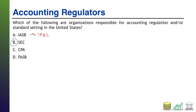CPA stands for Certified Public Accountant. This is the licensure you have to get in order to perform independent audits of companies — CPAs are not responsible for setting the rules. And then finally, D, the FASB. FASB stands for the Financial Accounting Standards Board. This is the group that the SEC has delegated standard-setting authority to in the United States. So in this case, the SEC and the FASB are the two relevant parties for standard setting and regulation in the United States.